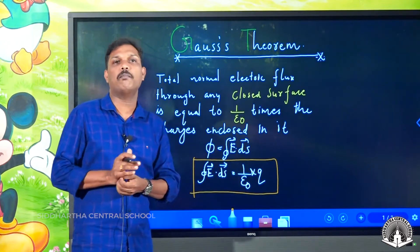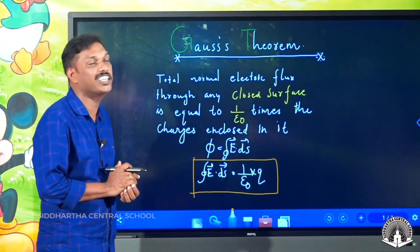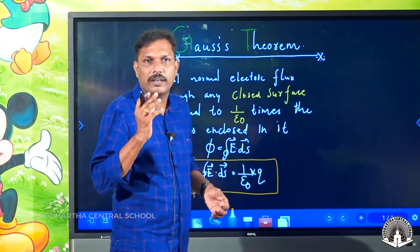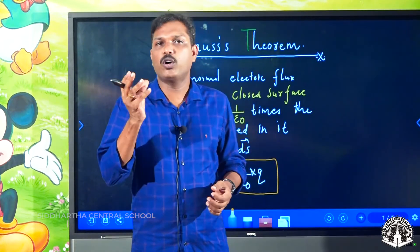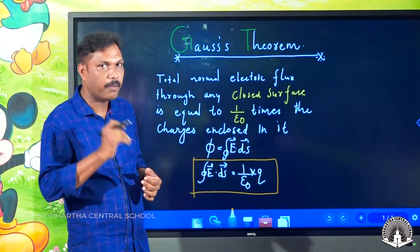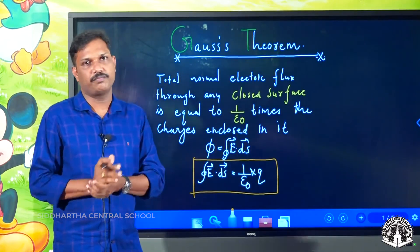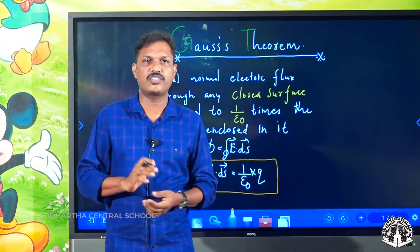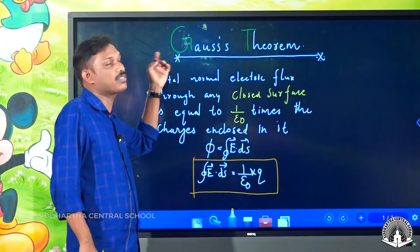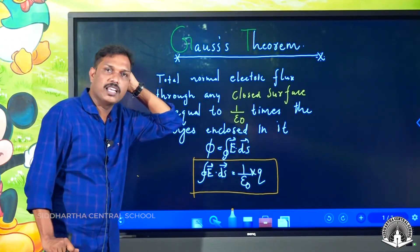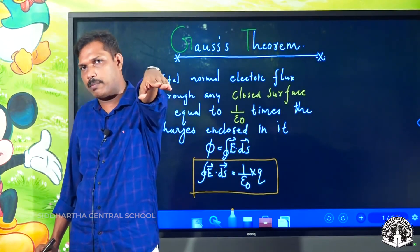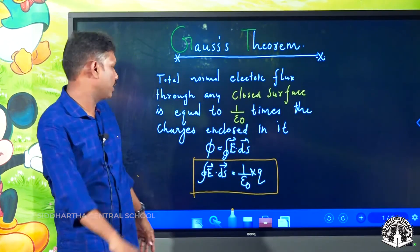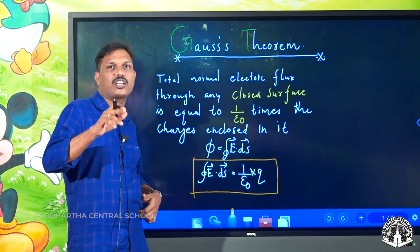What is the importance of Gauss theorem? The total electric flux through a closed surface is equal to the flux through any closed surface enclosing the same charges.